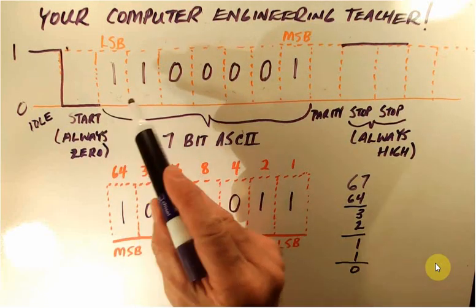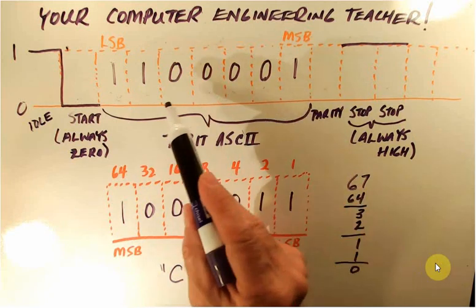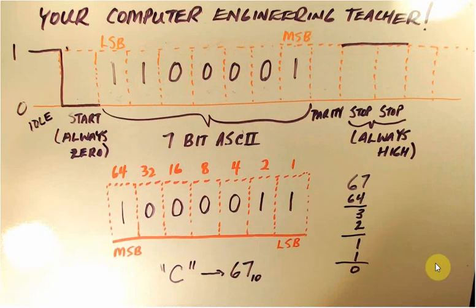So there, there is the binary number that represents the letter capital C.